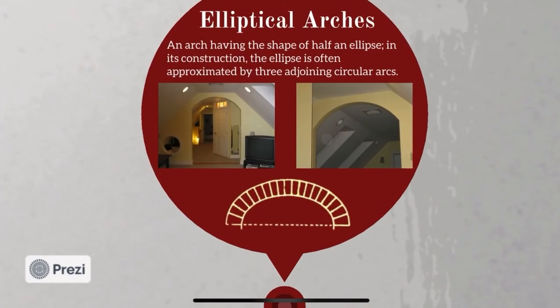Talking about elliptical arches — it is an arch having the shape of half an ellipse. In its construction, the ellipse is often approximated by three adjoining circular arcs.